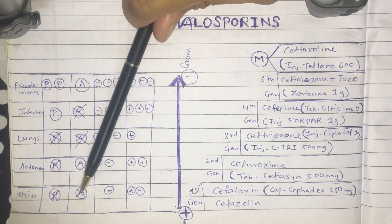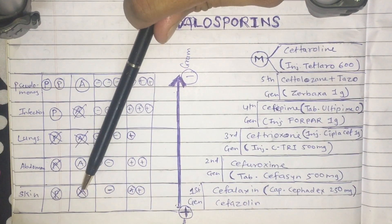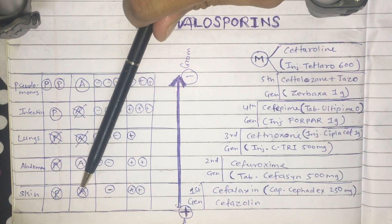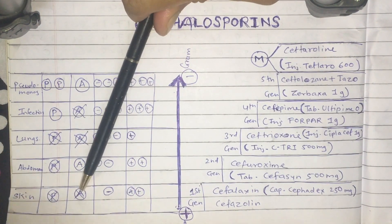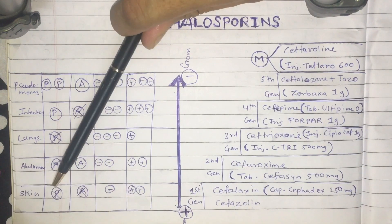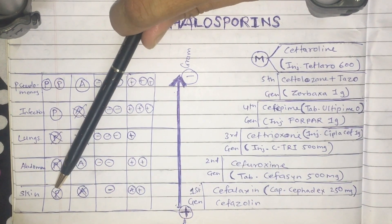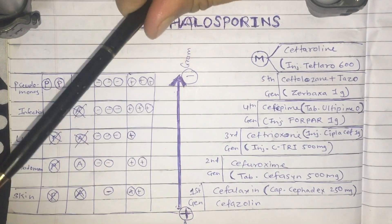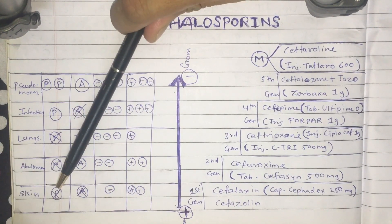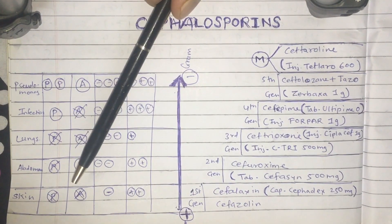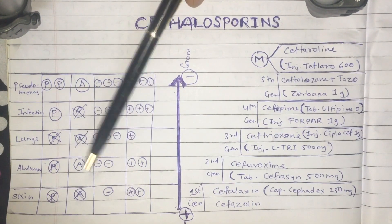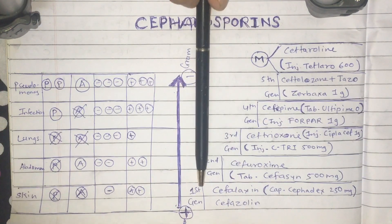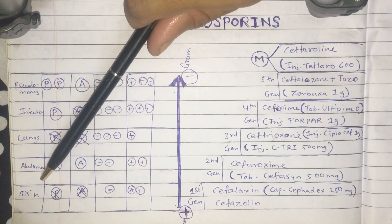The first generation cephalosporins also have no good activity against anaerobic microorganisms — those that do not require oxygen for survival — and no good action against Pseudomonas. Since most skin infections involve gram-positive microorganisms, first generation cephalosporins are the better choice for skin infections.